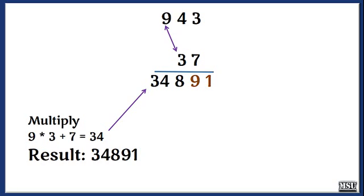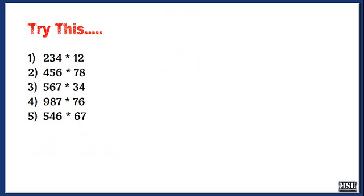Finally, multiply 9 into 3 plus carry 7, giving 34. The result is 34891. For simple reference, keep the pattern 1-2-2-1: where it's 1, it's a straight multiplication (leftmost to leftmost, rightmost to rightmost); where it's 2, it's a cross multiplication. Within a single process you get the result of multiplying any three-digit number by a two-digit number. Try these examples at home using this shortcut trick.